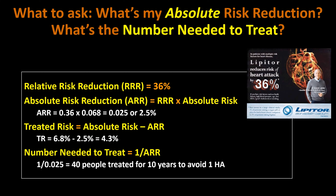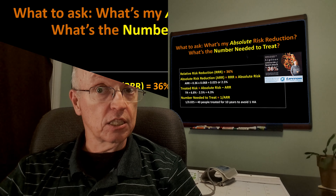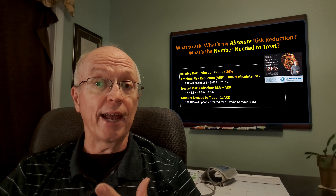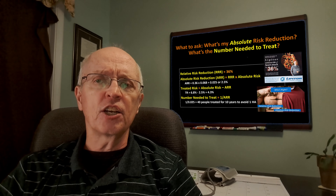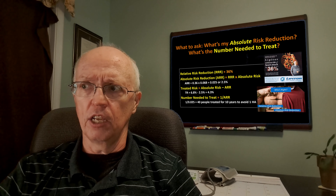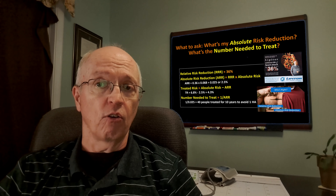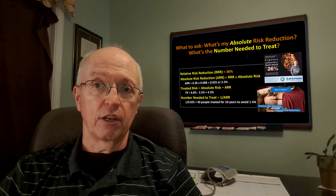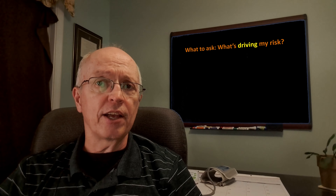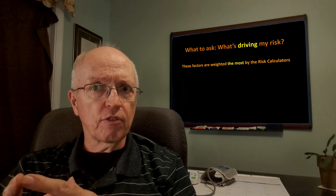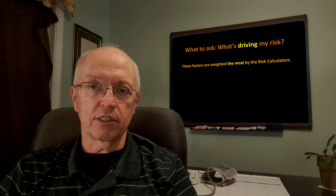My treated risk — the remaining risk after treatment — is 4.3% over 10 years. The number needed to treat is the reciprocal of the absolute risk reduction: 1 divided by 2.5% equals 40. That means if 40 people exactly like me all took statins for 10 years, we would avoid a single heart attack. That gives you an order of magnitude of what your actual benefit would be. I have a dedicated video on absolute versus relative risk reduction if you want to learn more.